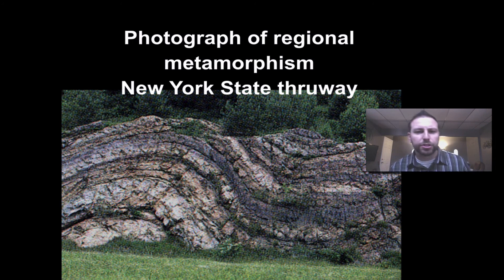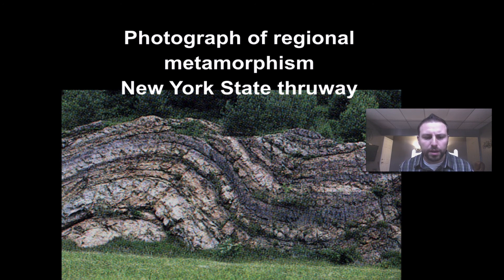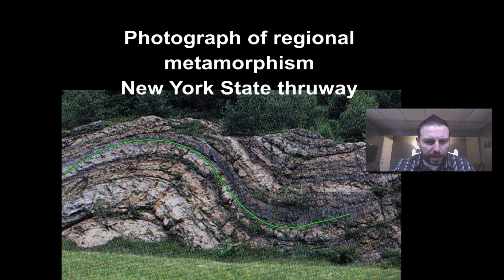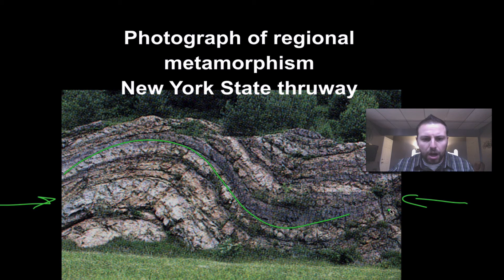Here's an example of regional metamorphism on the New York State Thruway. You can see this folding in the rock, which means this area was pushed — there was metamorphism acting on this rock.